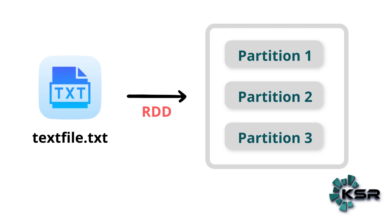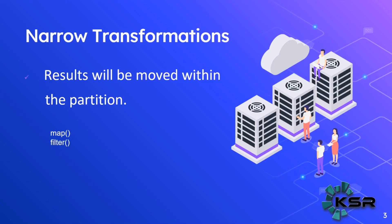When any narrow transformation happens on partition one, the result will stay within that partition and will not involve any other partition. Whatever transformation or function we call through the RDD happens within a single partition. Examples of narrow transformations are: map, filter, flatMap, union, intersection, sample, and mapPartition. There will be no shuffle operation between nodes or partitions.